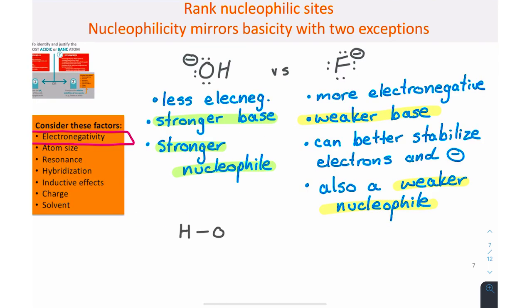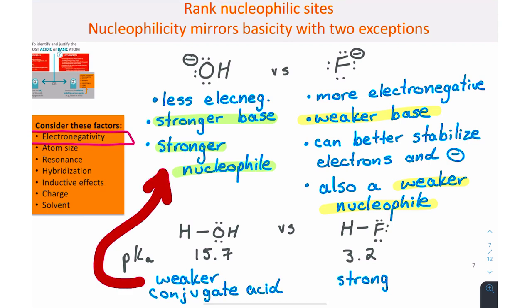For example, we can check our predictions about hydroxide versus fluoride by drawing each of their conjugate acids, water and hydrogen fluoride. Water has a pKa value of 15.7, while HF has a pKa value of about 3.2. So, water is the weaker conjugate acid, making hydroxide a stronger base, and therefore more nucleophilic, as we had predicted.